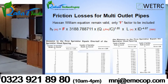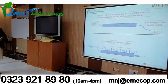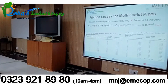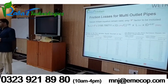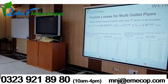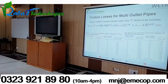For example, from the previous slide with 5 outlets: looking up 5 outlets in the table gives F = 0.397. If the Hazen-William formula gives friction losses of 10 meters, then multiplying by 0.397 gives 3.97 meters — and that is the actual friction loss in that pipe.